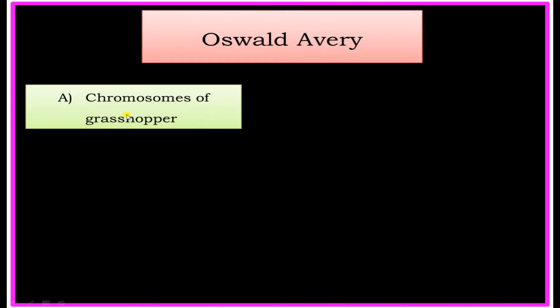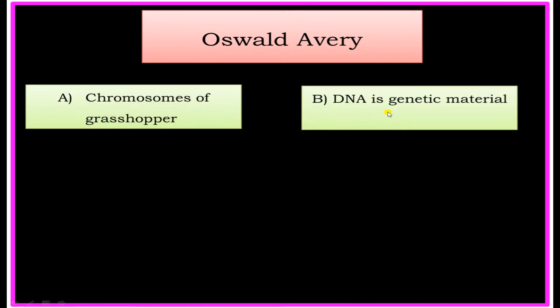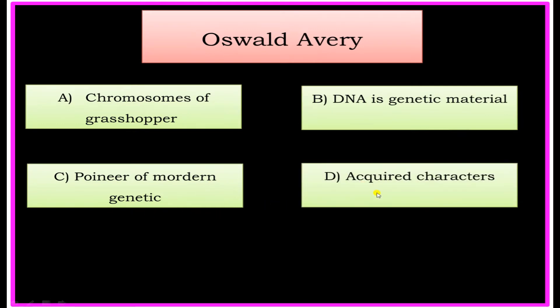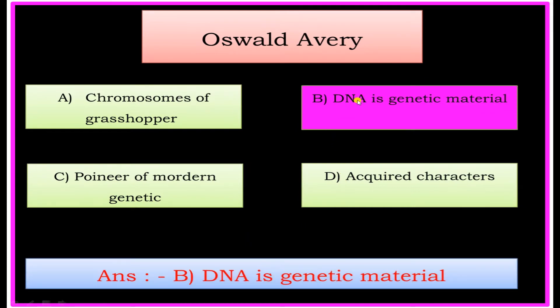Oswald Avery. Options: A) Chromosomes of Grasshopper, B) DNA is genetic material, C) Pioneer of Modern Genetics, D) Acquired Characters. The answer is: DNA is genetic material.